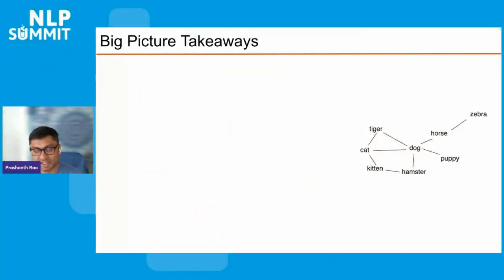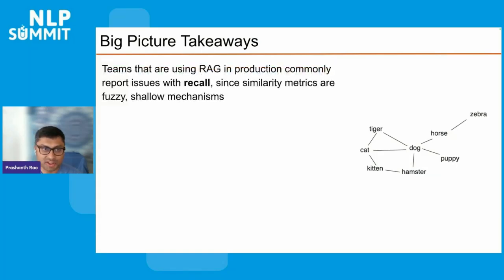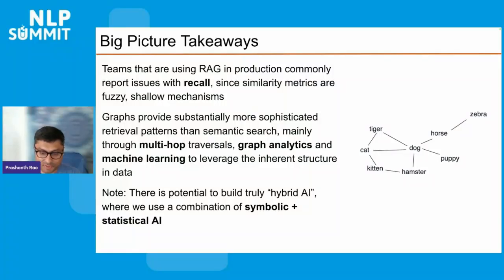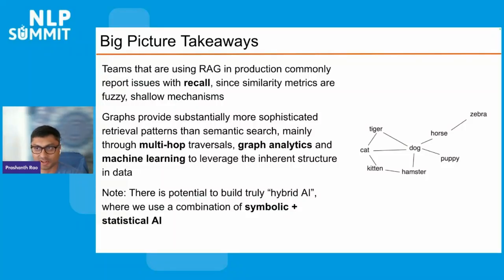From a big-picture GraphRAG perspective: teams using RAG in production commonly report issues with recall, mainly because similarity metrics are fuzzy and shallow mechanisms. Graphs provide substantially more sophisticated retrieval patterns than semantic search, mainly through multi-hop traversals, graph analytics, machine learning, and many other methods to leverage the inherent structure in the data. Although current GraphRAG systems are still firmly in the realm of statistical AI models like LLMs, with more advanced graph construction and quality assurance techniques, we can likely build truly hybrid AI systems combining symbolic plus statistical AI to power the retrieval systems of the future.